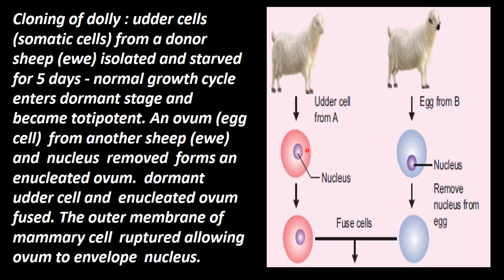In the cells there would be normal changes — cell cycle changes. The normal growth cycle enters a dormant stage. The normal growth cycle becomes a dormant stage.